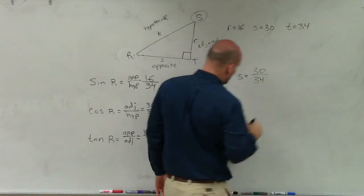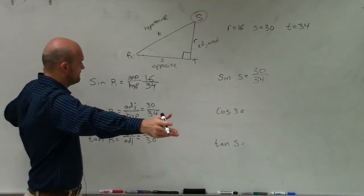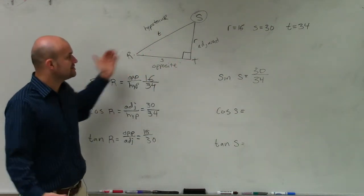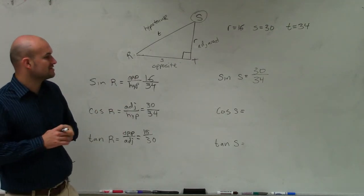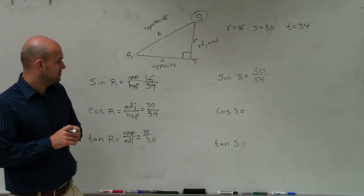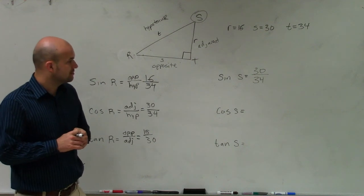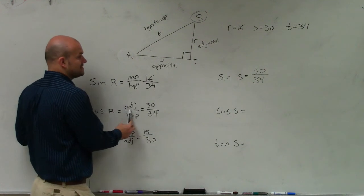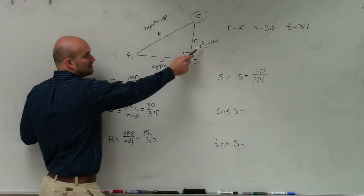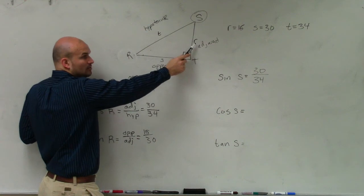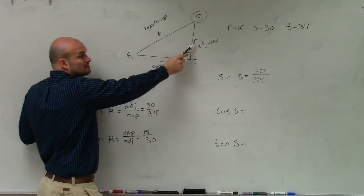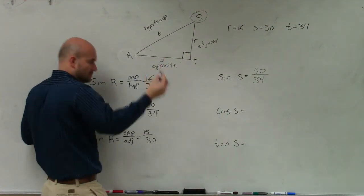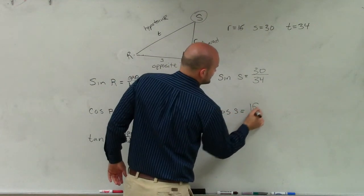And then, Mario, the cosine of s is going to be? The opposite of the hypotenuse. Cosine, which is adjacent over hypotenuse. So, therefore, it's going to be... The adjacent side of my angle s is now r, which is 16, over the hypotenuse, which is 34. So that's going to be 16 over 34.